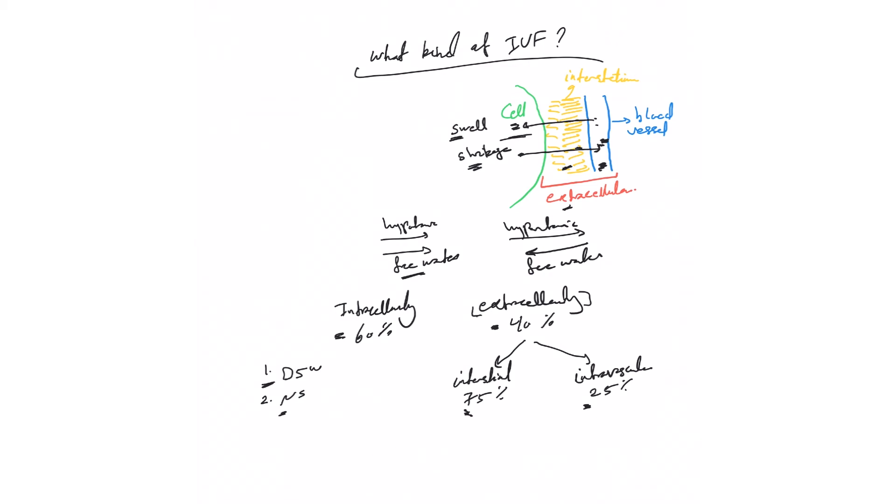How about LR, lactated Ringer's? It's an isotonic solution, so it will follow the same rule. How about half NS? Half NS has 500 cc of free water and 500 cc of normal saline. Technically, you can divide the bag: half of it is normal saline, half of it is free water. So the free water will follow this rule, the 60 and 40.